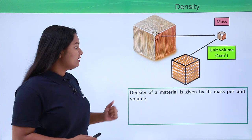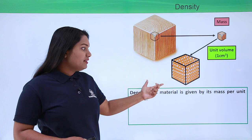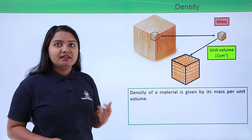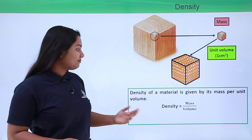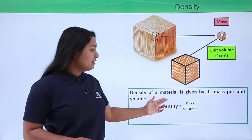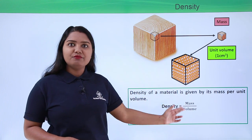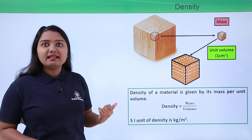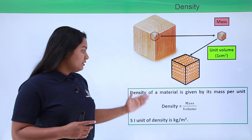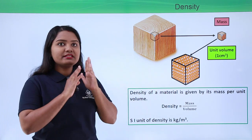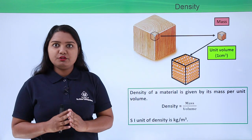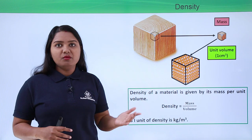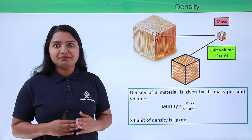So in this case, the density of a material is given by mass per unit volume — that is, density equals mass divided by volume. The SI unit in which the density of a substance is measured is kg per meter cube, and it is also measured in terms of gram per centimeter cube.